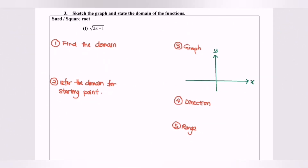Here we have a second example: f(x) = √(2x − 1). We apply the same steps. Since the square root requires the expression to be ≥ 0, we set 2x − 1 ≥ 0, which gives x ≥ 1/2.